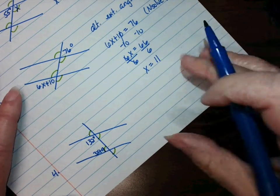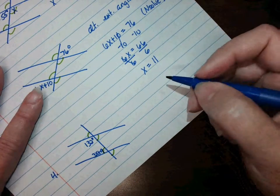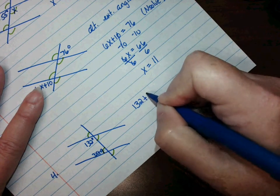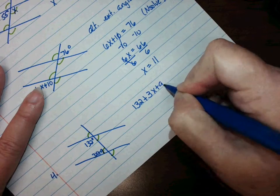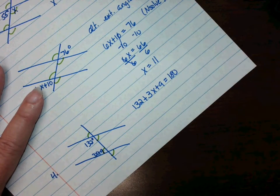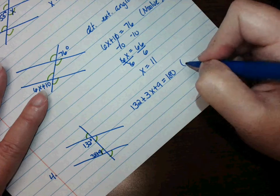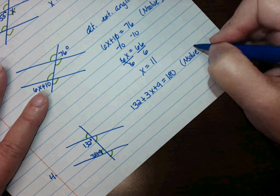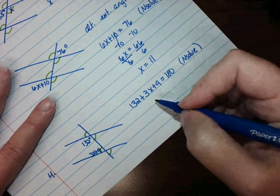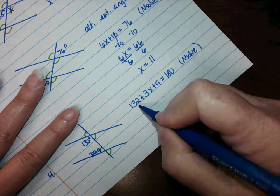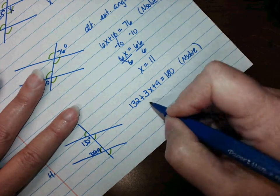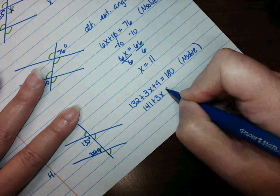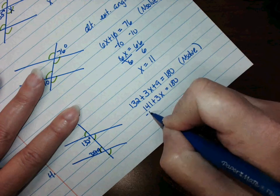That means they're not equal. That means they add up to 180 degrees. That means 132 plus 3x plus 9 has to equal 180 degrees. At this point you can solve to get the value of x, or if you solve by hand you would have to do 132 plus 9 is 141, subtract 141.